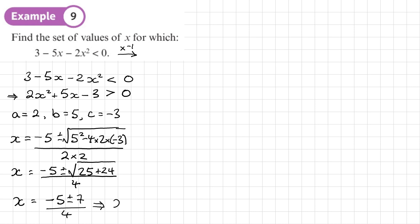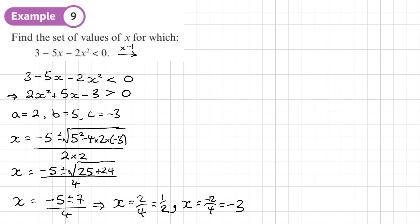So the two roots are: negative 5 plus 7 over 4, which is 2 over 4, giving x = one half; and negative 5 minus 7 over 4, which is negative 12 over 4, giving x = negative 3. So my two roots are x = one half and x = negative 3. Now I'm going to draw my sketch.